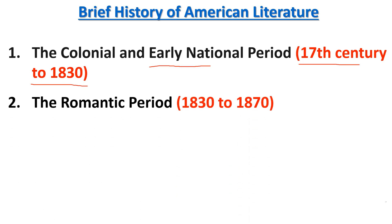The next important period is the Romantic Period — a very important period in the history of American literature. The time duration of the Romantic Period is from 1830 to 1870. The most important literary figures of this period include Edgar Allan Poe, H.W. Longfellow, Ralph Waldo Emerson, and Walt Whitman. These are very important writers who made significant contributions to the history of American literature.